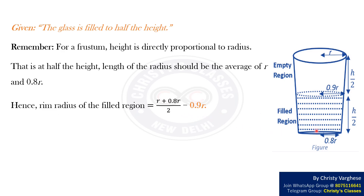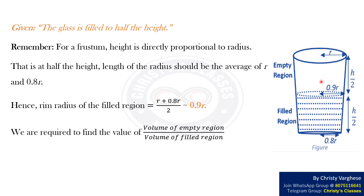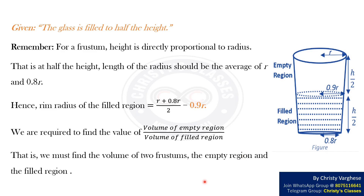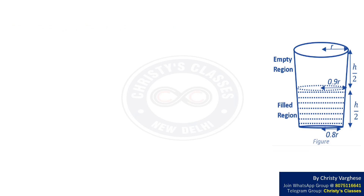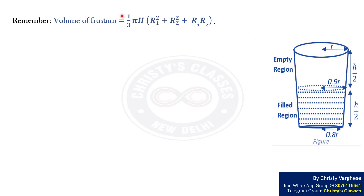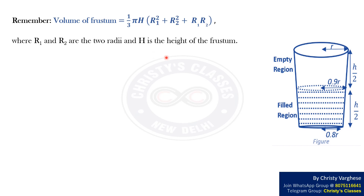We are required to find the value of volume of the empty region divided by volume of the filled region — that is, the volumes of two frustums: the empty region and the filled region. Volume of a frustum equals (1/3)πh(r1² + r2² + r1·r2), where r1 and r2 are the two radii and h is the height of the frustum.